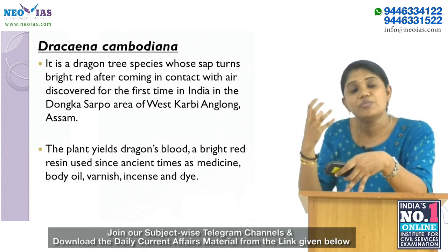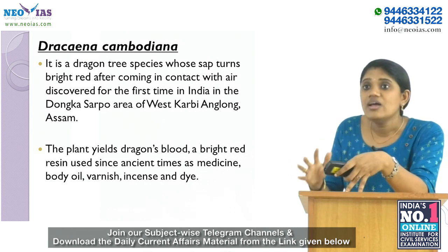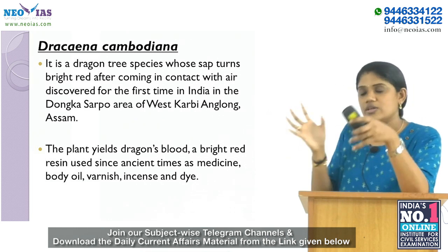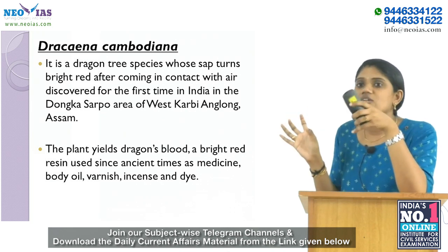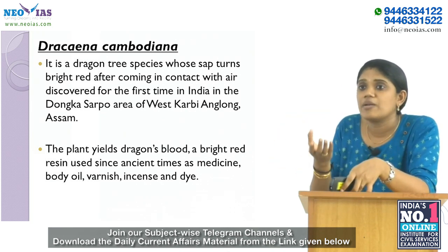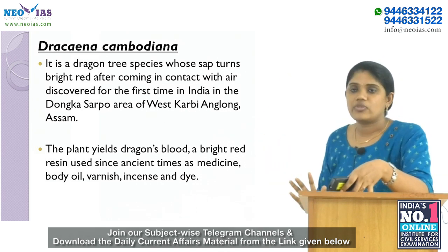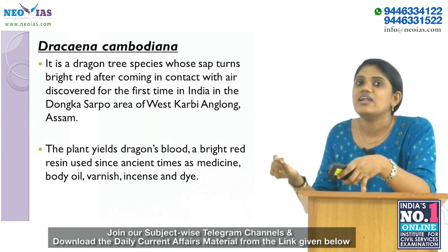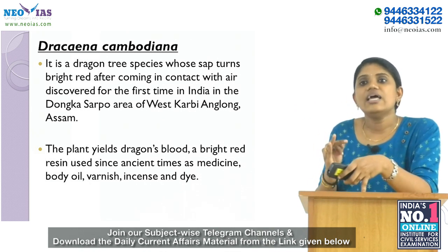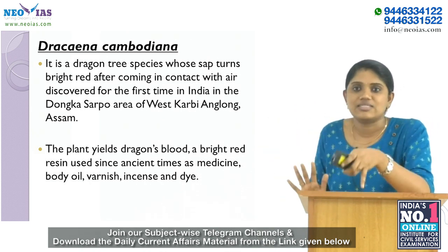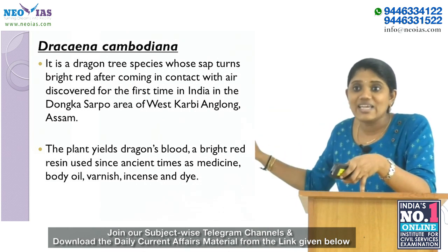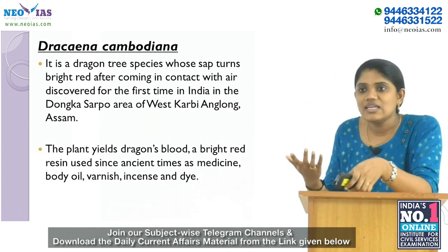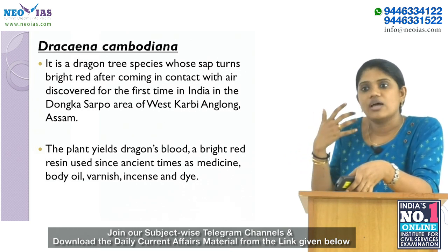Dracaena cambodiana is a dragon tree species whose sap turns bright red on contact with air. This plant yields dragon's blood — a bright red resin — and has been used since ancient times as medicine, body oil, varnish, and dye.